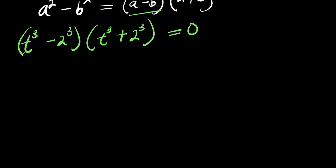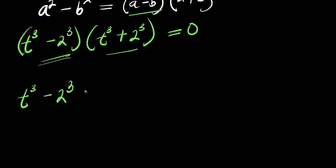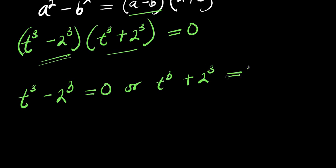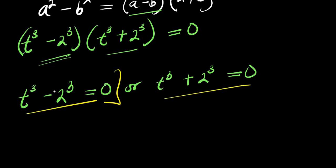So what we are going to do is equate each of these to 0. We have t power 3 minus 2 power 3 equals 0, or we have t power 3 plus 2 power 3 equals 0. Now we are going to solve each of these equations, so let's start with this cubic equation.